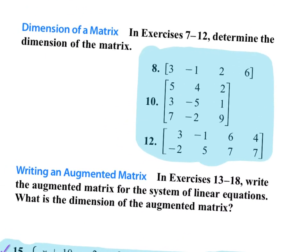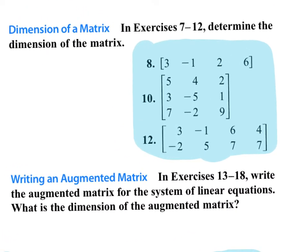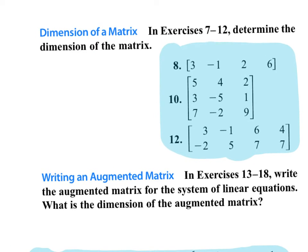If they ask you what the dimensions of the given matrix are, please write this down: the way that you identify the dimensions is row by column. That means we look left to right, then up and down — just like the x and y-axis. It's how many rows there are of numbers versus how many columns.